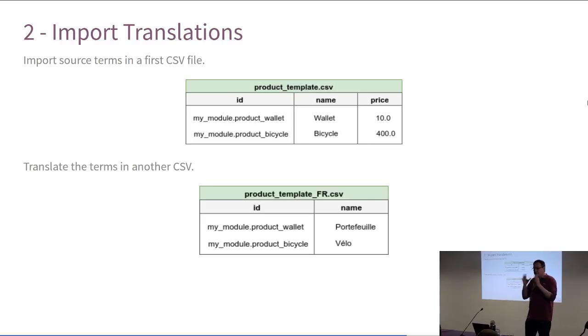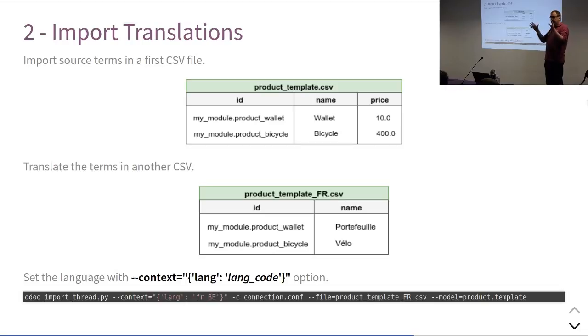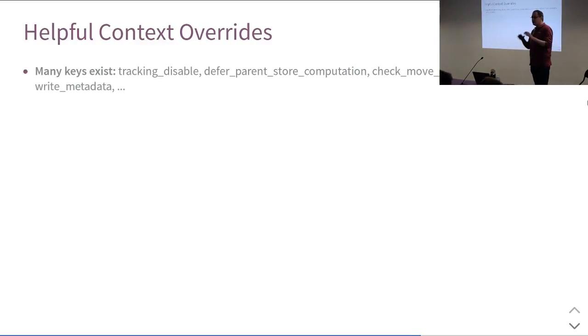So how can I do this? I can use the context. Yeah. I can define the context in the command line. I said context with the key lang. And by doing this, I just tell Odoo, okay, update the name, that's the only thing you can do. But now we are working in French. Genius. Very efficient. So there are lots of dictionary keys in the context that we can use. It's not the purpose now to explore them deeply. But feel free to come and see me at the end of the talk. It will be a pleasure for me to discuss it with you.